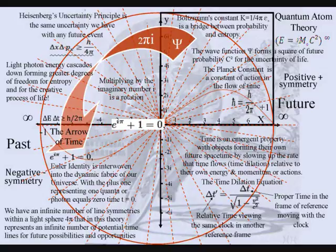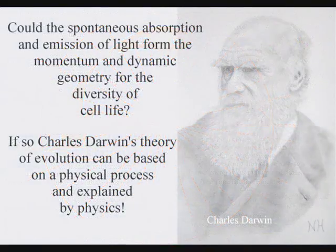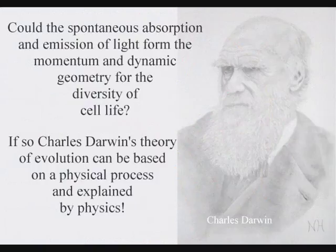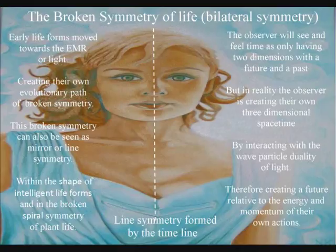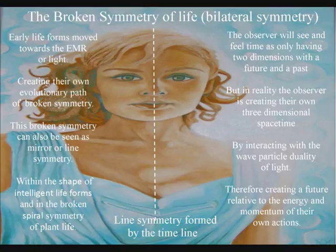Intelligent life will form its own evolutionary path out of these potential line symmetries, and because this is a geometrical process with life an integral part of the process, this line symmetry will be visible in the physical shape of intelligent life in the form of left and right handedness.